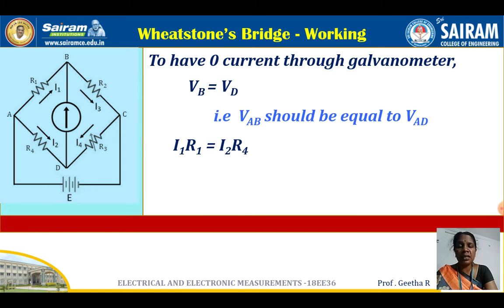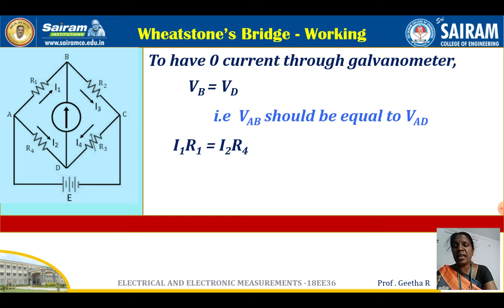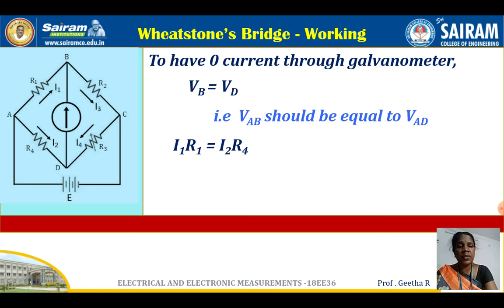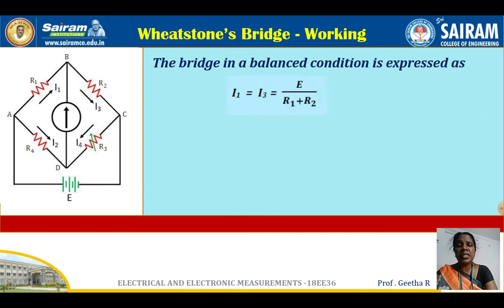Using Ohm's law (V = IR), the voltage across AB is I1×R1, and the voltage across AD is I2×R4. Since V_AB equals V_AD under balanced condition, we get the equation: I1×R1 = I2×R4.